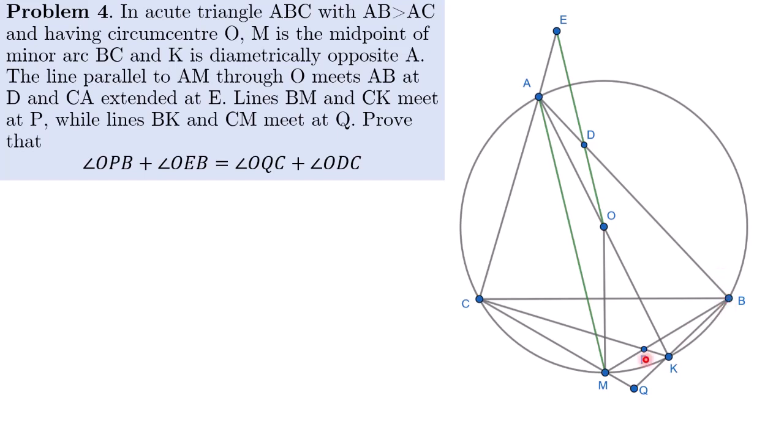The lines BM and CK meet at P while lines BK and CM meet at Q. So we are supposed to prove that angle OPB plus angle OEB is equal to angle OQC plus angle ODC.